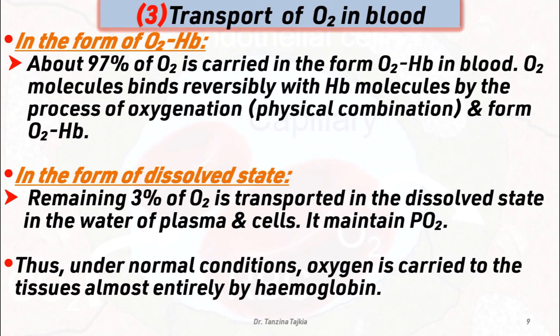Third, transport of oxygen in blood in two forms: oxyhemoglobin and dissolved state. About 97 percent of oxygen is carried in the form of oxyhemoglobin. Oxygen molecules bind reversibly with hemoglobin by the process of oxygenation to form oxyhemoglobin. The remaining three percent of oxygen is transported in dissolved state in the water of plasma and cells. This dissolved state maintains the partial pressure of oxygen. Under normal conditions, oxygen is carried to the tissues almost entirely by hemoglobin.